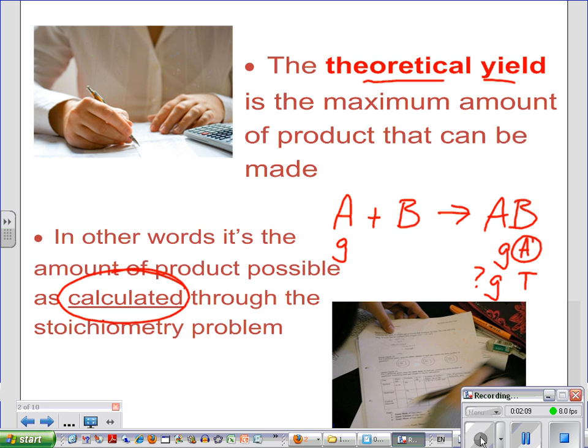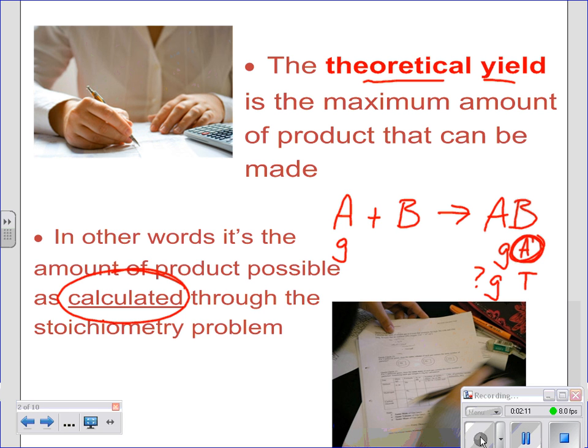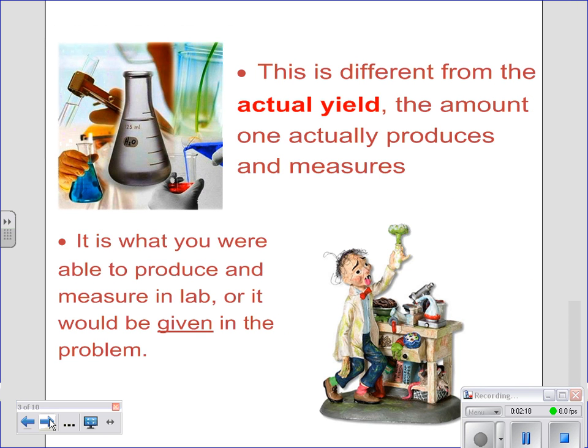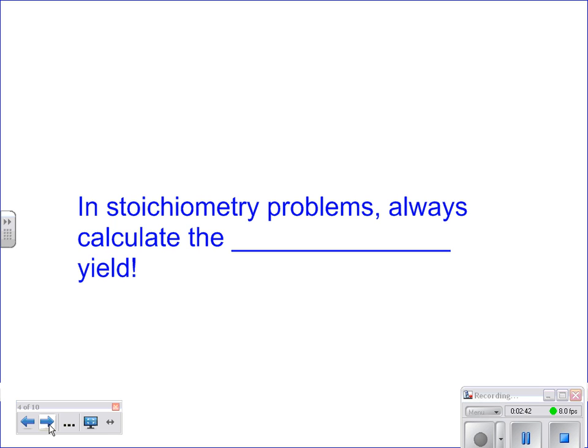Since you're given your actual, you are going to be calculating your theoretical, then compare those two in a percent yield problem. Actual yield is what you actually get back in lab. If we're doing problems as homework or on a test, that value would have to be given to you. The hard part is that many people can't identify that easily from their givens in the problem.